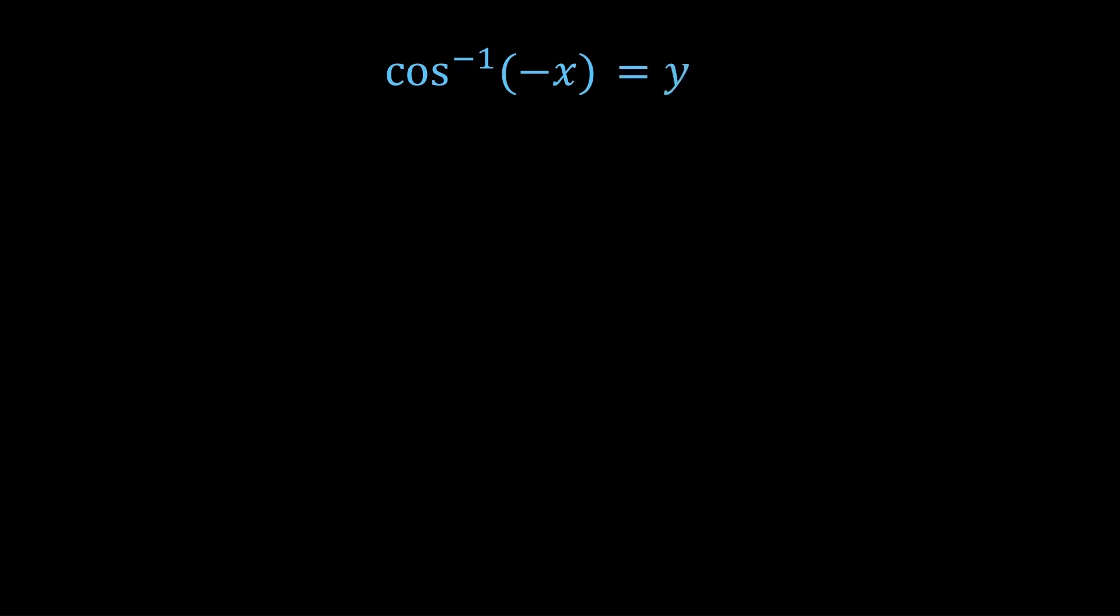Just keep in mind that y is in 0 to π, because that is the range of cos inverse. Now we take cos of both sides, giving us minus x equals cos y.